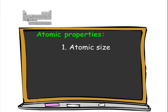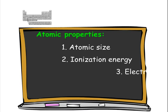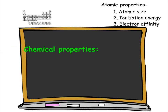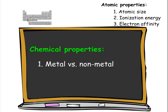First we'll look at atom size, then at ionization energy — that is, the amount of energy needed to remove the outermost electron. Lastly, we'll look at electron affinity, the tendency for an atom to attract an additional electron. The chemical properties that we commonly associate with the elements follow from these physical properties.